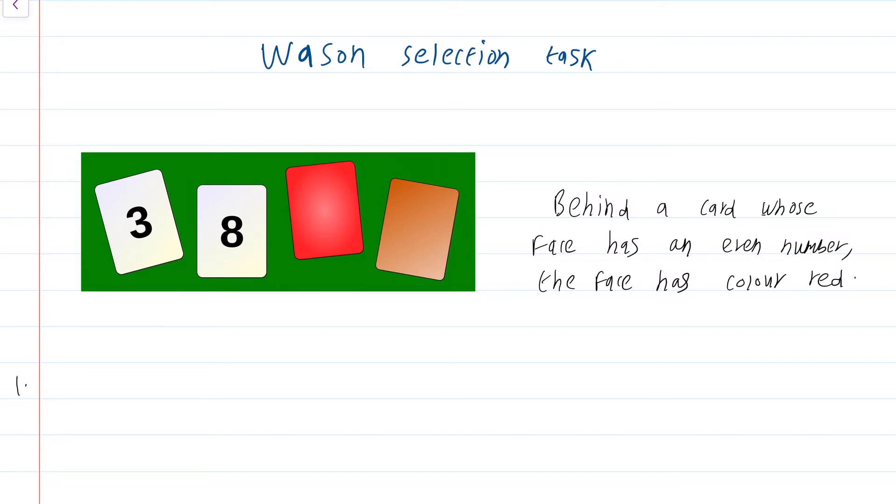Let us look at the card that says 3 that has one face 3. Is there any need to flip over this card to see whether the opposite side is red in colour? No. So, this card, no flip required. Why is that? Because if you look at the statement, behind a card whose face has an even number, the face has colour red.